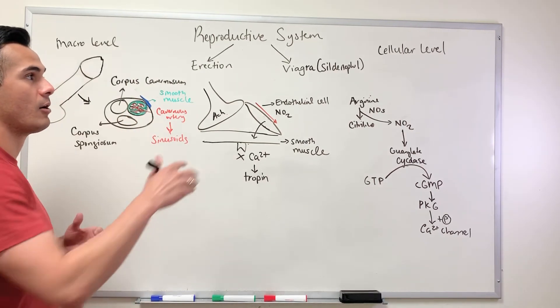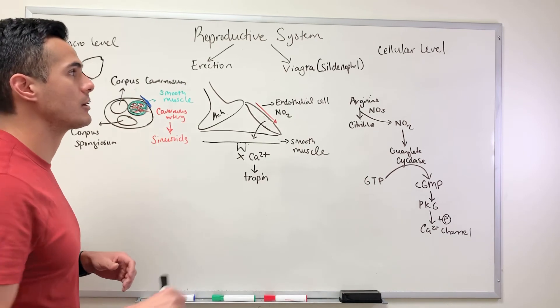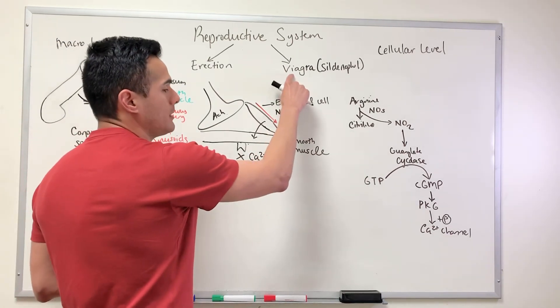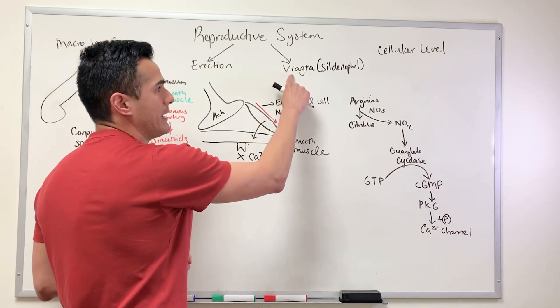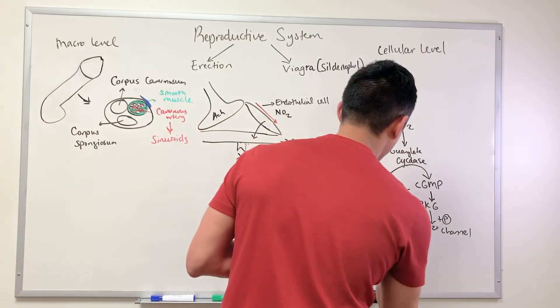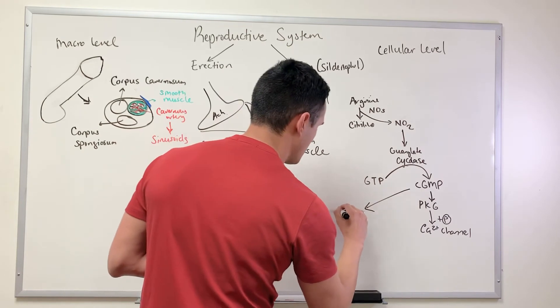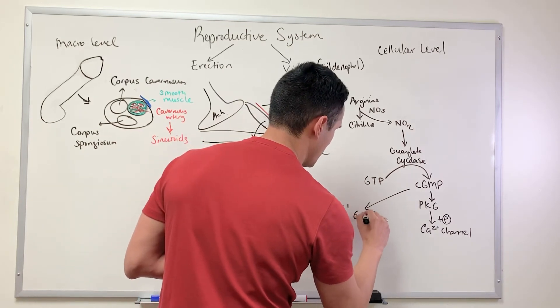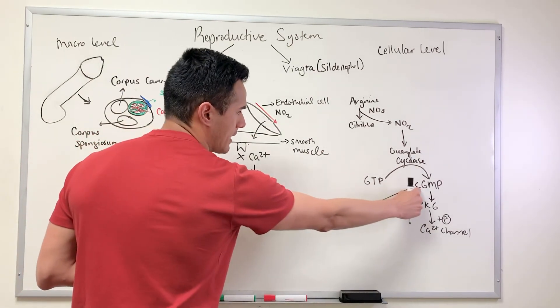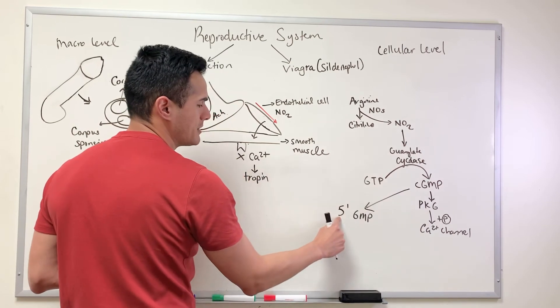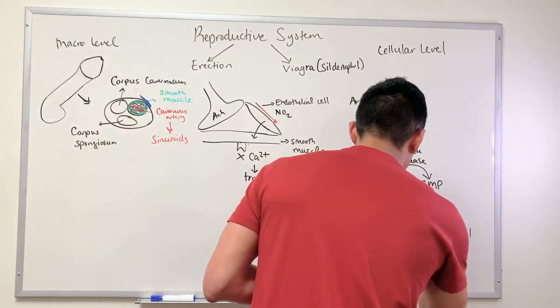Now let's discuss how Viagra works. Viagra targets an enzyme. What this enzyme does is it degrades cyclic GMP into five prime GMP. The enzyme that degrades cyclic GMP to five prime GMP is known as phosphodiesterase.